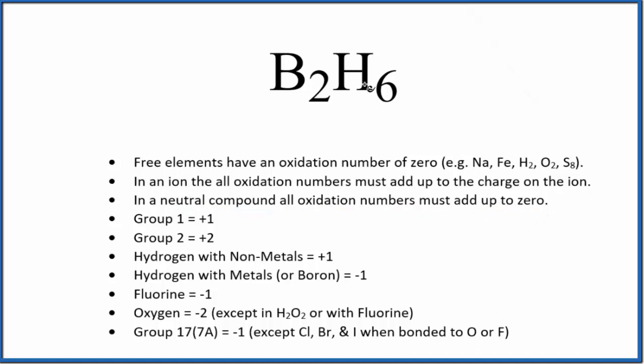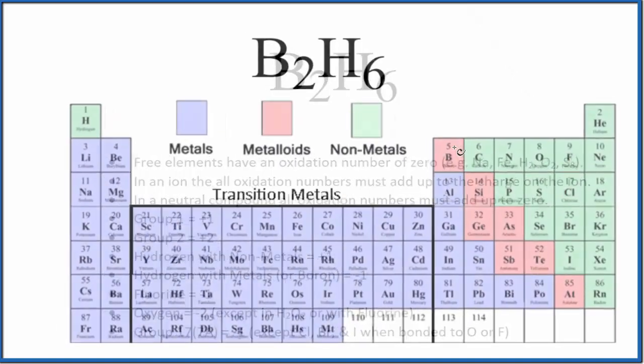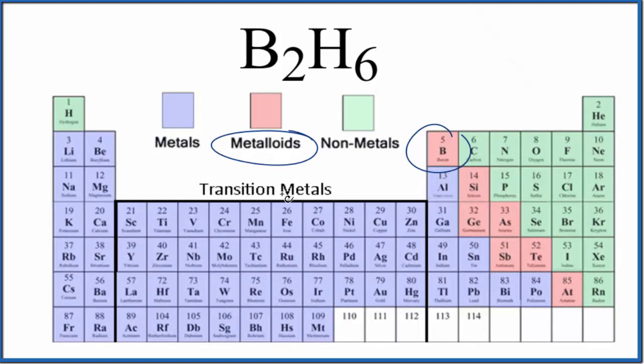Next, when we look at hydrogen, we usually think of hydrogen being plus one as its oxidation state, but that's when it's bonded to nonmetals. If you look at the periodic table, boron, that's a metalloid, so we need to be a little more careful here.